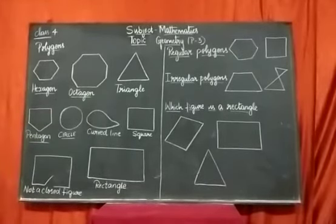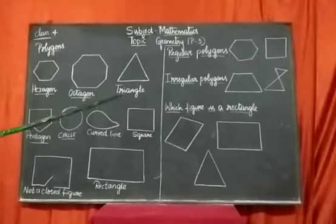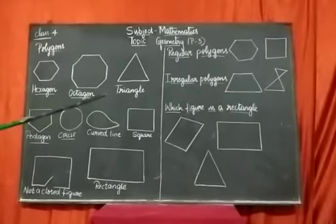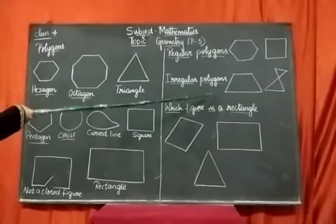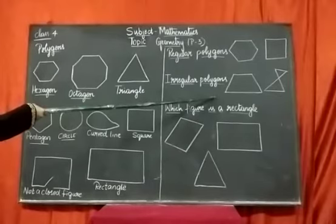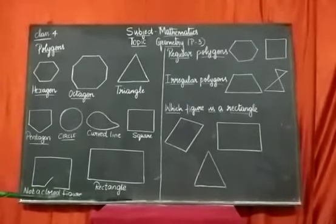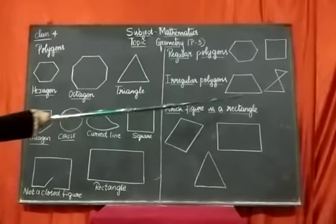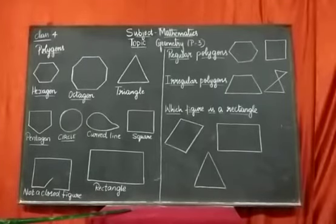Next, irregular polygon. What do you mean by irregular polygon? An irregular polygon is a polygon whose sides are not equal. This is a polygon but it is an irregular polygon because its sides are not equal. In this figure also, the sides are not equal and the angles formed are also not equal.